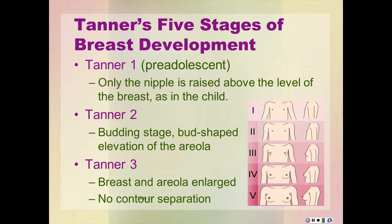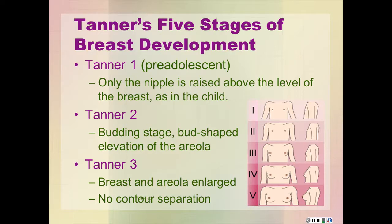Tanner stage one is pre-adolescent: only the nipple is raised above the level of the breast, as in a child. Tanner two is the budding stage: bud-shaped elevation of the areola, where the areola is increased in diameter and the surrounding area is slightly elevated. In Tanner stage three, the breast and areola are enlarged and there is no contour separation. Refer to page 108, chapter five, figure 5-10 in your Seidel text.